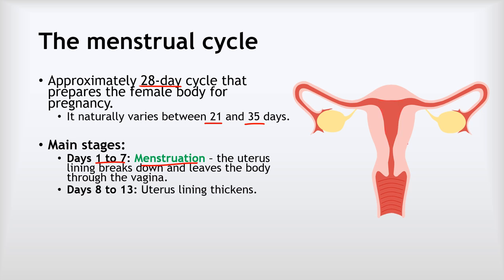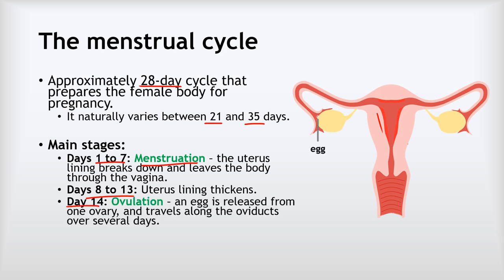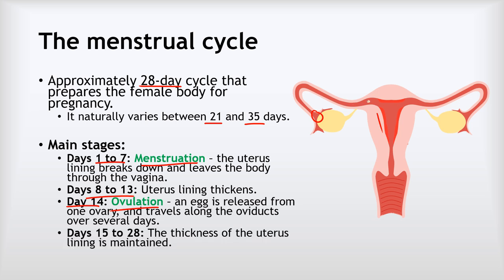Between days eight to 13, the uterus lining, which is very thin at this point, gradually gets thicker and thicker. On day 14, we have ovulation — the release of an egg from one of the ovaries. That tiny egg travels along the oviducts, being wafted along by those ciliated epithelial cells. On days 15 to 28, the thickness of the uterus lining is maintained, staying nice and thick to accommodate a developing embryo should fertilization take place. But if no embryo is implanted, the uterus lining breaks down again and we go back to days one to seven with menstruation.